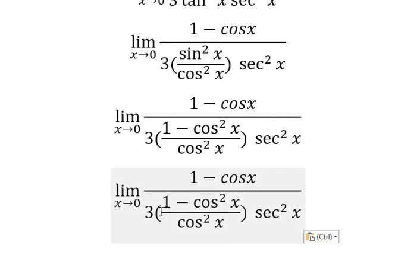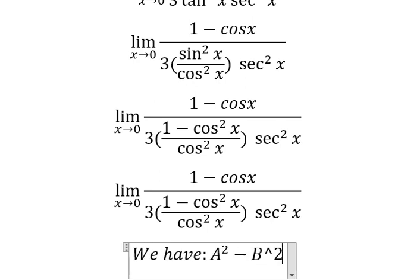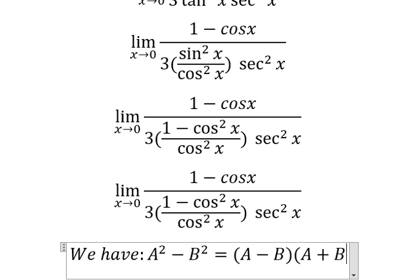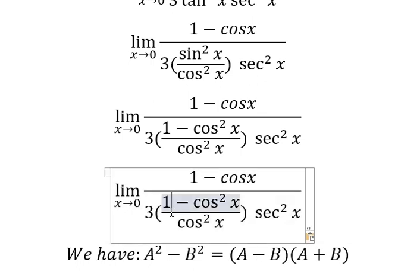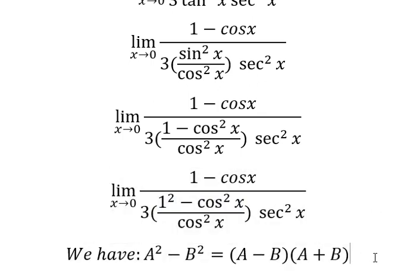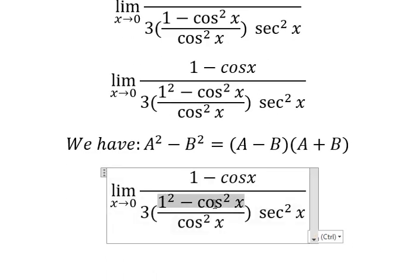We also have the formula a² - b² = (a - b)(a + b). Number 1 can be written as 1², and then we need to transform this expression using this formula.